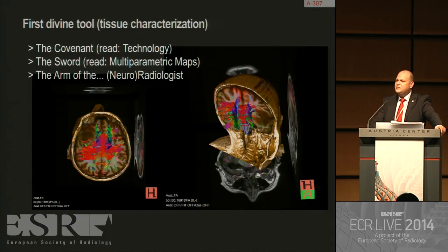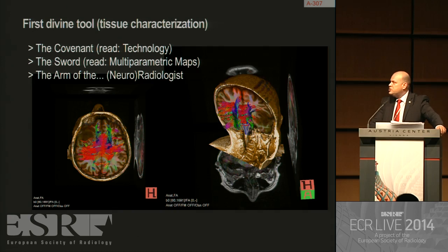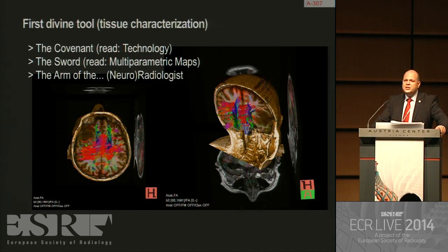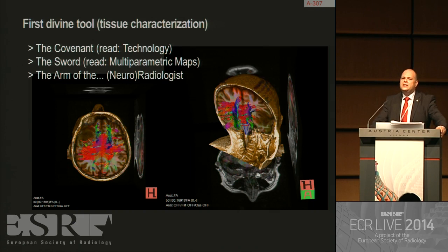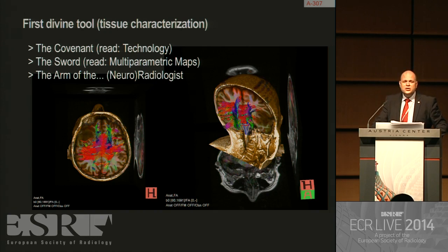Let me come back to the blasphemous issue. Radiologists are the only medical doctors actually in possession of a divine tool of tissue characterization — defining structure without any sample, as pathologists and histopathologists do. We are lying at three postulates: this is the covenant — the capability of technology; the sword — our tool and the possibility of obtaining multi-parametric maps that scrutinize tumorous tissue; and, of course, the arm of the neuroradiologist, because without the neuroradiologist's knowledge, it is very difficult to extract information beyond nice pictures.